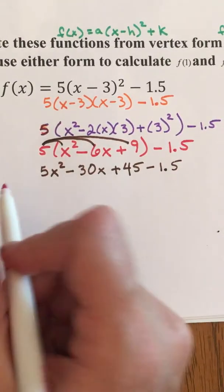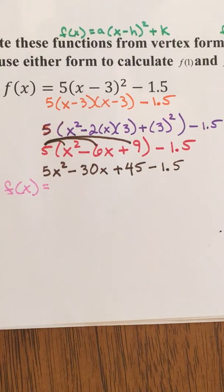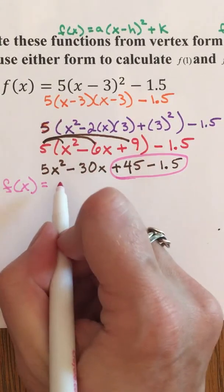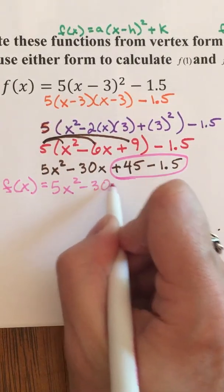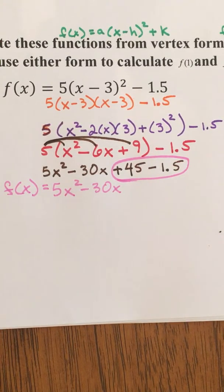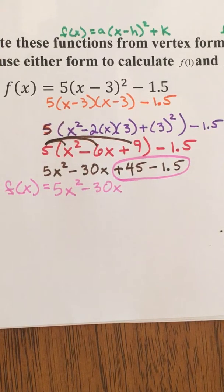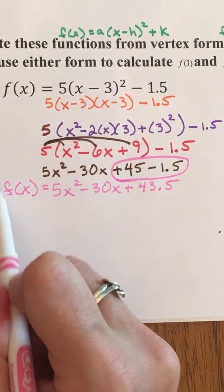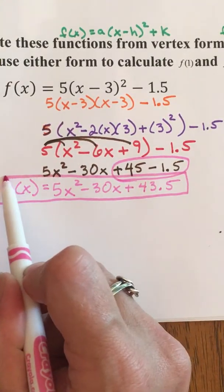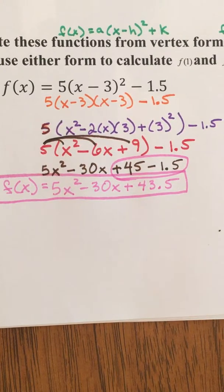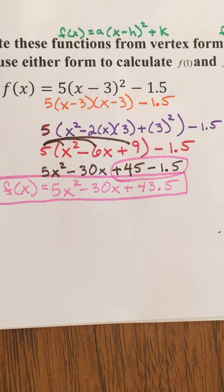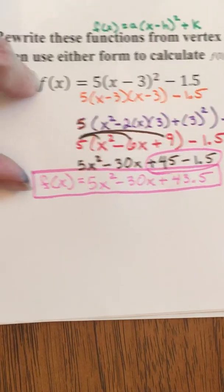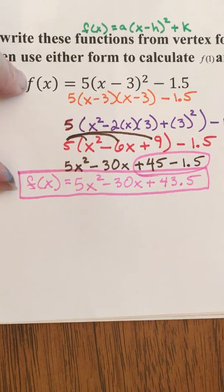Okay we're at our very end so f of x will equal this polynomial after I combine those two like terms so I have a 5x squared I have a minus 30x and then what is 45 minus 1.5 can you do it? Good job it's 43.5 positive 43.5 so that is the standard form of our original equation from right there so this one typed here in black it has the exact same value as the one that we found here in pink they mean the same thing completely the same thing they just look different that's okay.